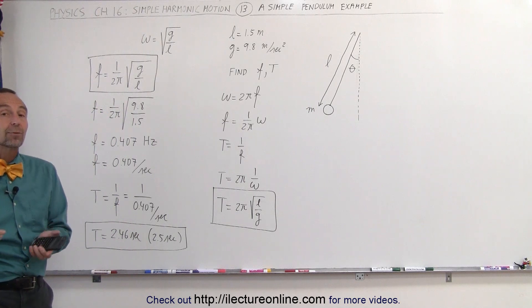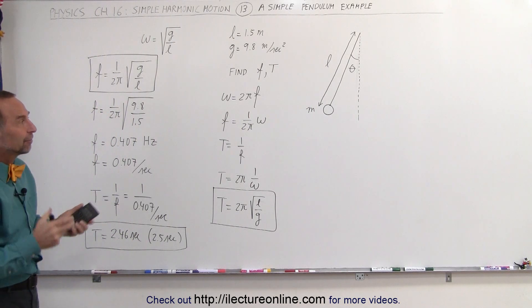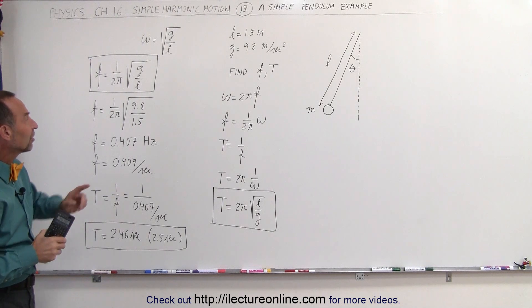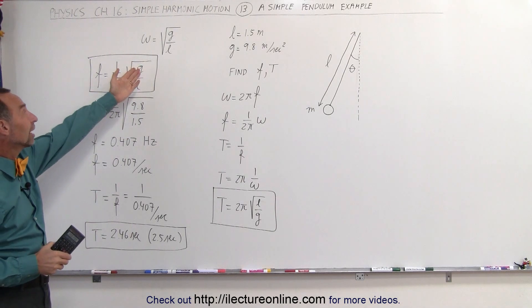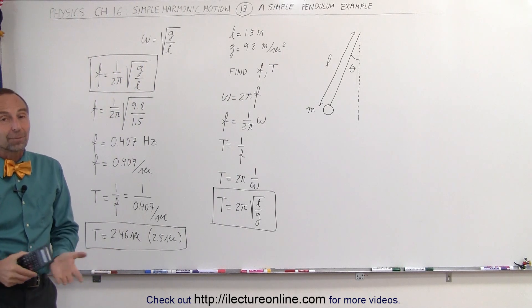You can see there's a lot of similarities between a pendulum and an object suspended from a spring. However, the difference is that omega is not the square root of k over m, but in this case it's equal to the square root of g over l. And that's the simple pendulum.